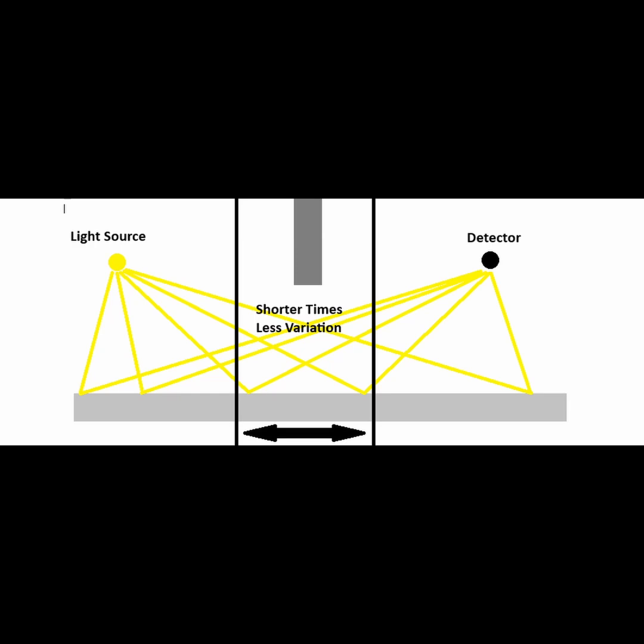It turns out that the total contribution of probable paths that light can take around the center of the mirror are more aligned and reinforce each other, while the paths around the outside of the mirror tend to cancel out or minimize due to the wider variations in travel times.